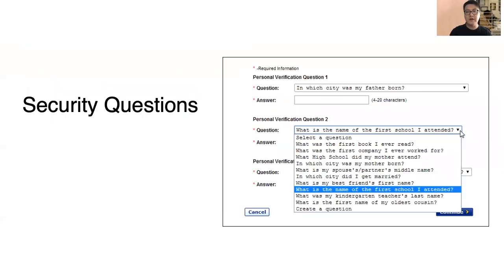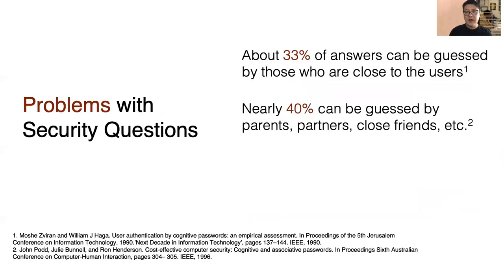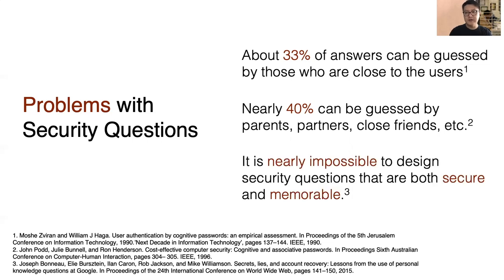One popular fallback authentication approach is to use security questions — for example, 'In which city was my father born?' or 'What is the name of the first school I attended?' But are these security questions really secure? Probably not. Prior studies found that about 30 to 40% of these answers can be guessed by those who are close to the user. Moreover, researchers find that it is nearly impossible to design security questions that are both secure and memorable.